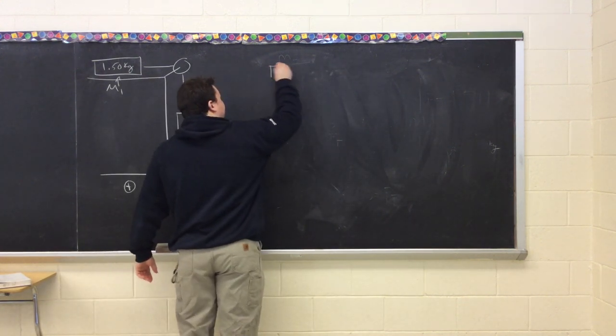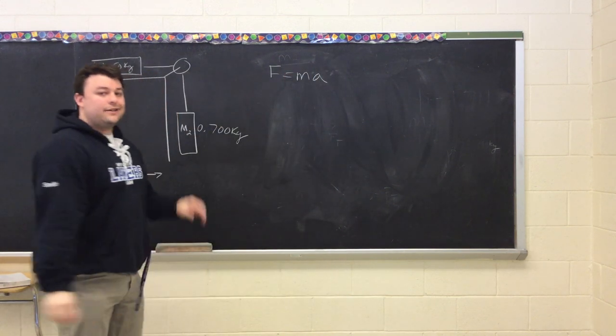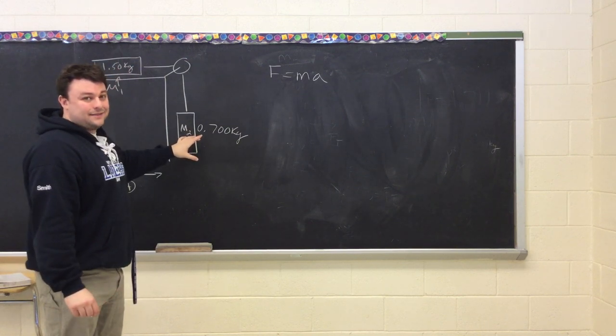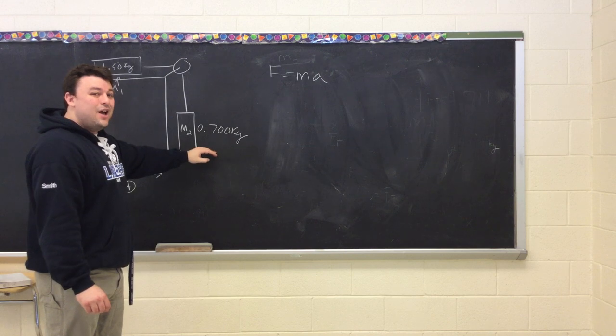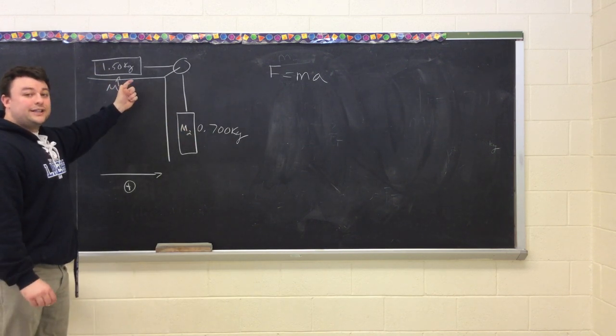Force is equal to mass times acceleration. It's important to note that this system has a combined mass, but the force is only equal to the force of gravity on the second object because the force of gravity on the first object cancels out.